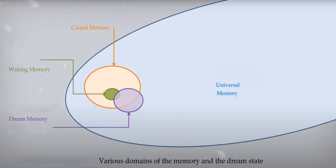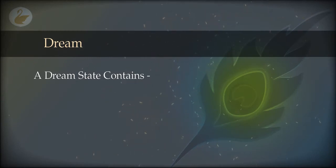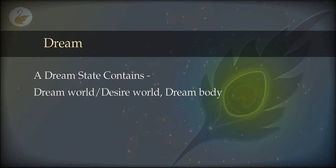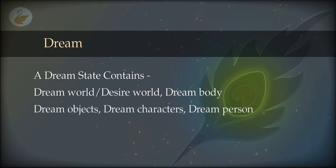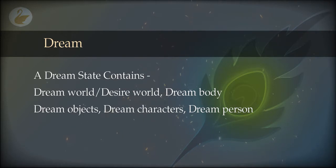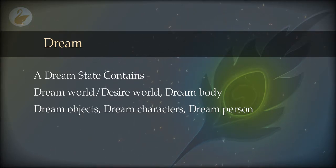As you know, there is a world and a body associated with each state. The world in the dream state is the dream world, also sometimes called the desire world because the primary occupation here is to fulfill desires. The body is called the dream body — a faint copy of the waking state body. If you are human in the waking state, that image is copied from waking memory and a dream body resembling the waking body is produced. We can also call it the desire body, because it is simply expressing the desires, which is why the purple circle occupies a large area in the causal memory.